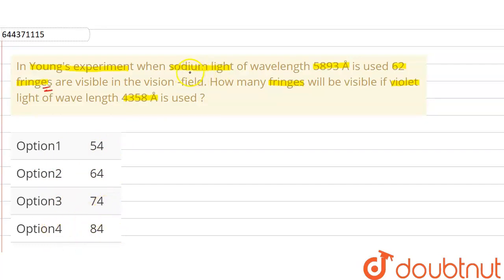In the question we have given when we use sodium light of wavelength 5893 angstrom, we got 62 fringes. Here we have lambda 1 of sodium light, the wavelength is 5893 angstrom, and we have got N1 fringes equal to 62.